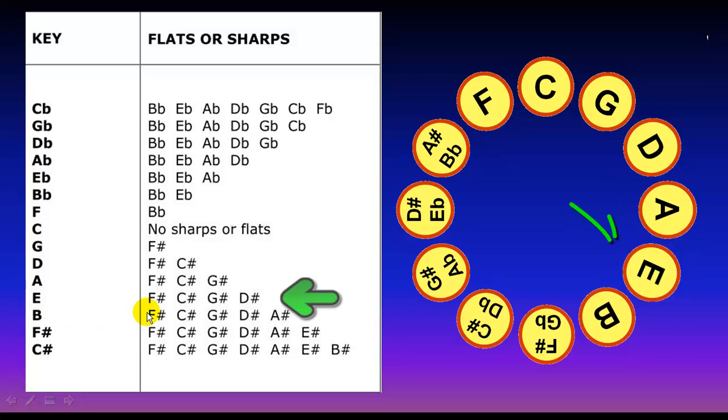Key of E: F sharp, C sharp, G sharp, and D sharp. For B, you add the A sharp in. For F sharp, you add the E sharp there. And C sharp, you add the B sharp.